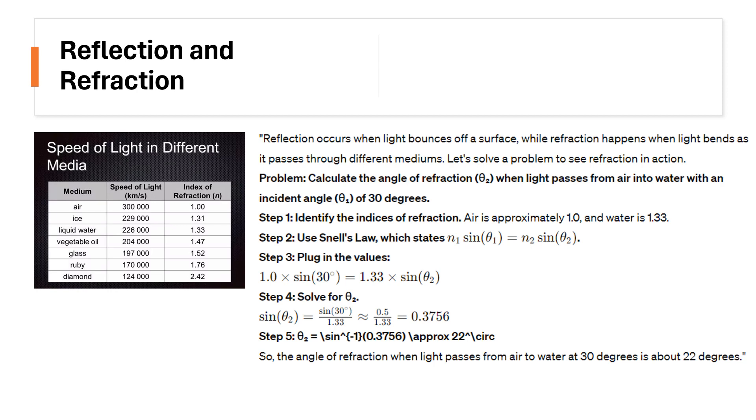Calculate the angle of refraction theta sub 2 when light passes from air into water with an incident angle theta sub 1 of 30 degrees. Just like our previous discussions, you can always find the given, or list down the given and ask, for you to get additional points or effort points for problem solving activities aside from the solutions.